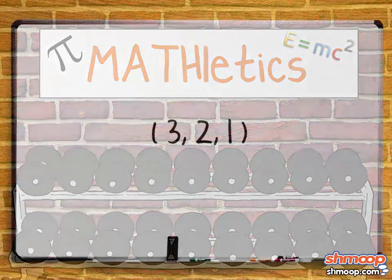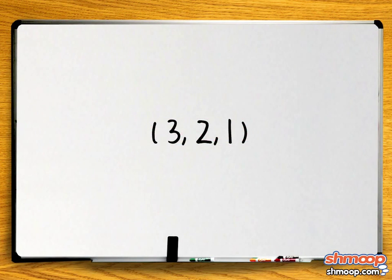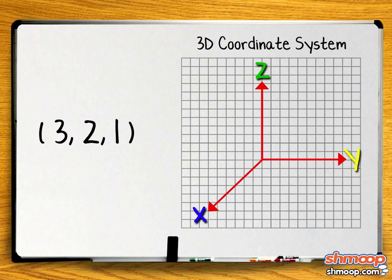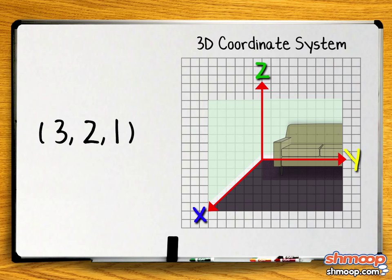Before we try figuring out what 3, 2, 1 means, let's first orient ourselves with the axes of a three-dimensional coordinate system. Think of the x, y, and z axes as the corner of a room, with the x-axis pointing toward you.